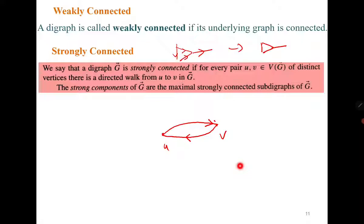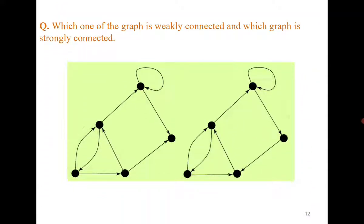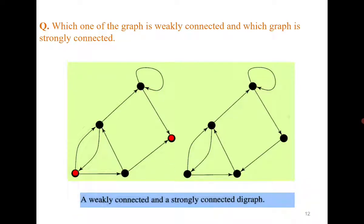Both example graphs are weakly connected since their underlying graphs are connected. In the first graph, you can go from u to v but there is no directed path from v to u, so it is not strongly connected. In the second graph, between every pair of vertices there exists a directed path in both directions, so the second graph is strongly connected while the first is not.